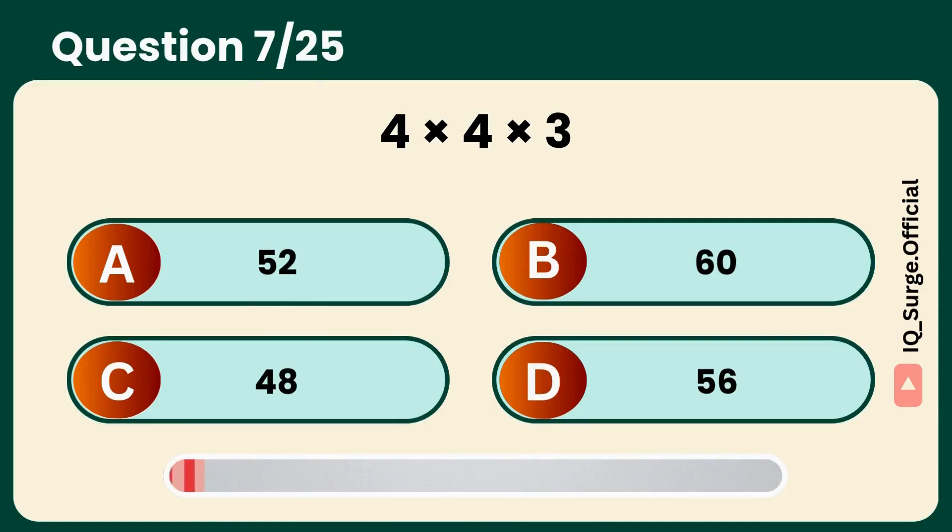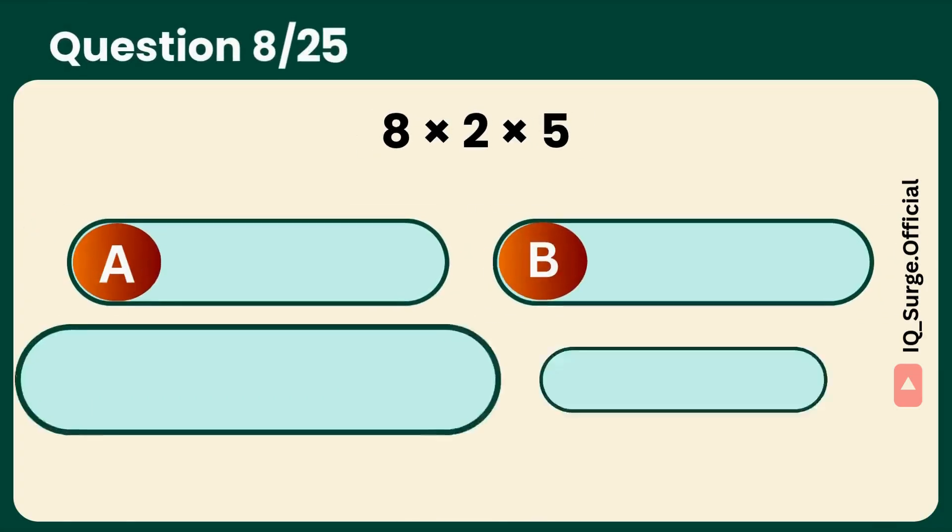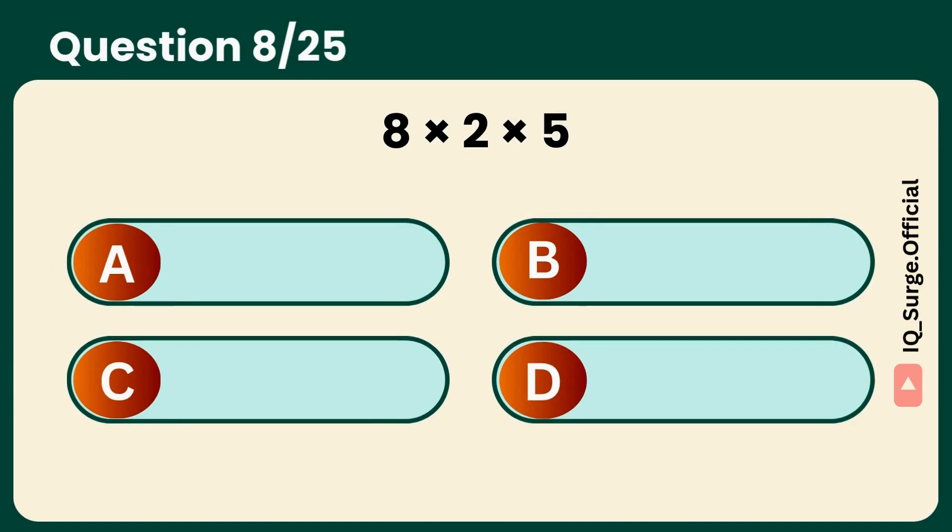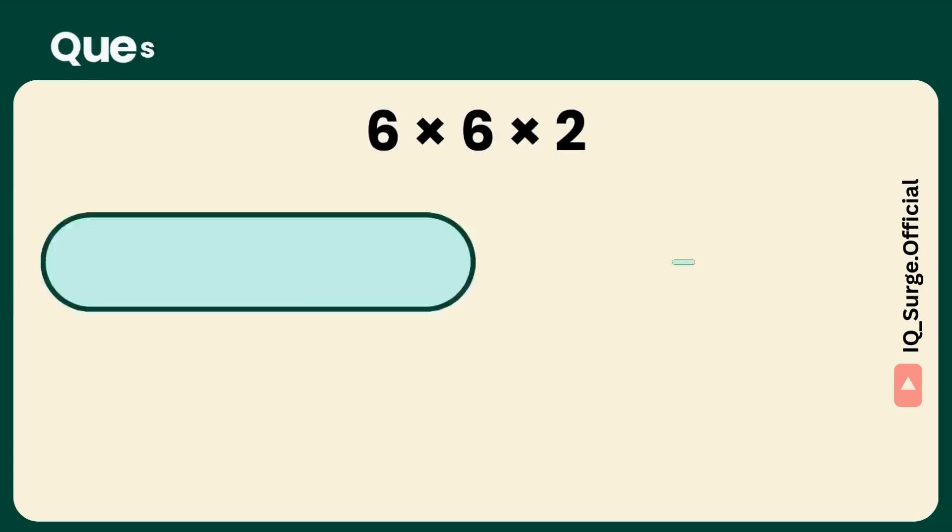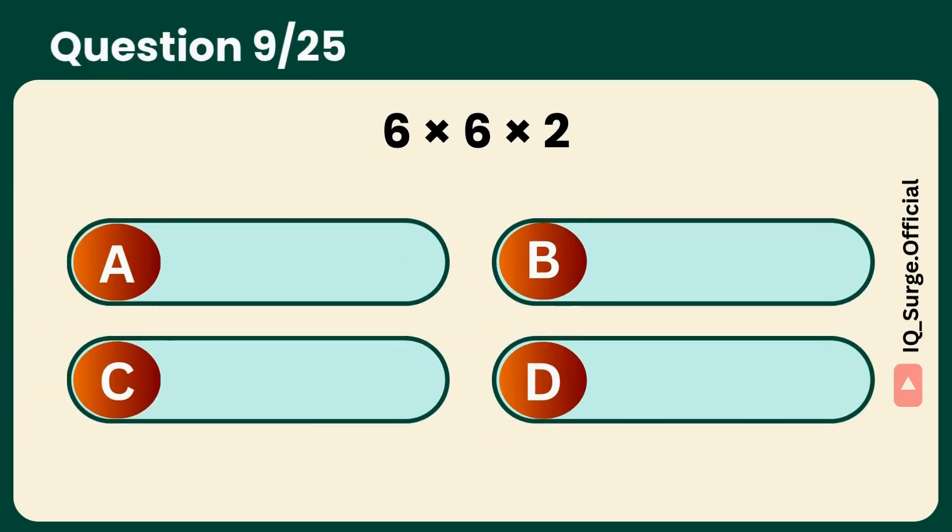What is 4 times 4 times 3? A square number hiding here. Answer: C, 48. What is 8 times 2 times 5? Can you do this instantly? Answer: D, 80.